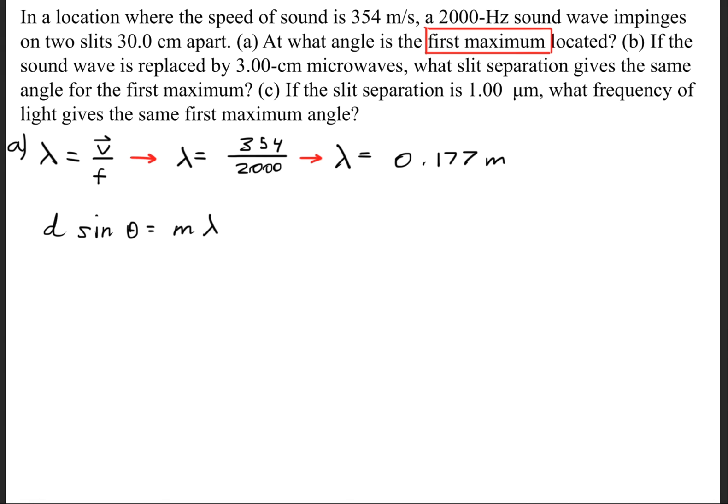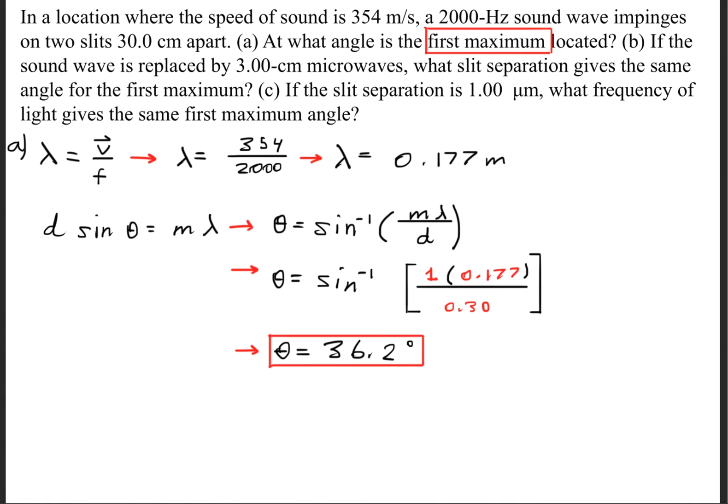Since we're talking about the first maximum, we're talking about a bright fringe, so we'll use the constructive interference formula. When we plug in the variables, we get that the first maximum angle is 36.2 degrees.